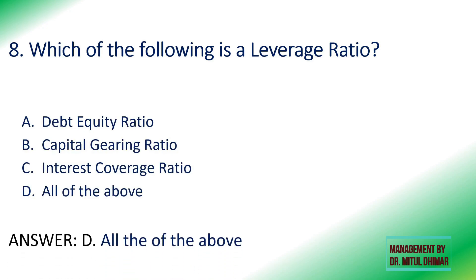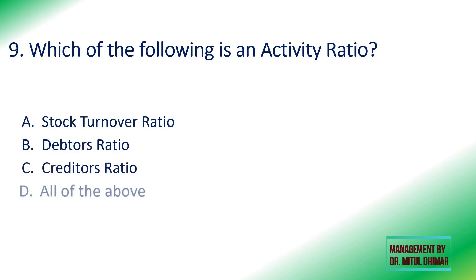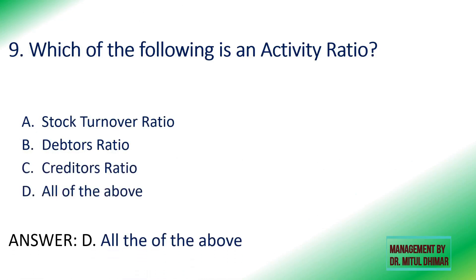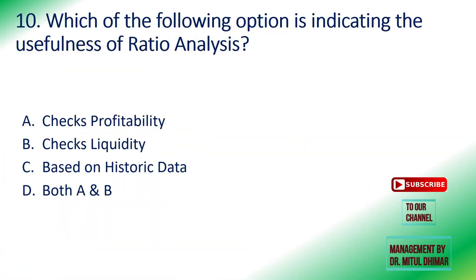Ninth: which is an activity ratio — stock turnover, debtors ratio, creditors ratio, or all of the above? The answer is all of the above. These are our activity ratios, along with the assets turnover ratio.